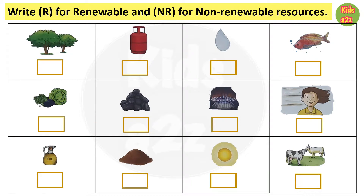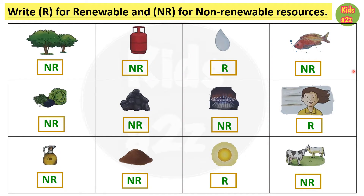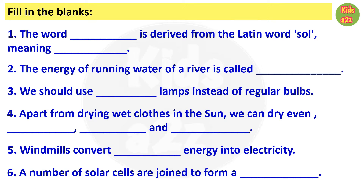In this worksheet, some pictures of renewable and non-renewable resources are given, and kids need to write R for renewable resources and N for non-renewable resources. Water, wind, and the sun are renewable resources, and the rest are non-renewable resources.